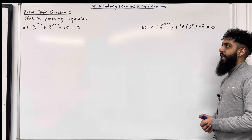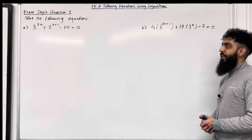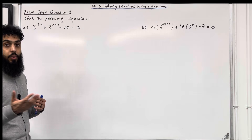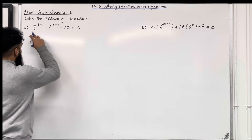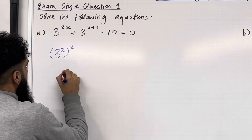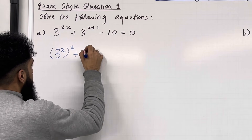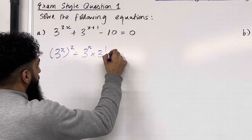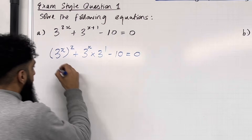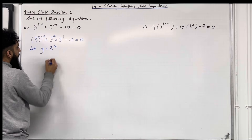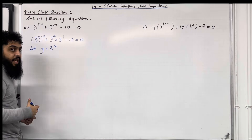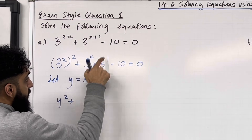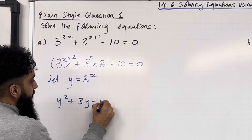Solve the following equations. Part A: 3 to the power 2x plus 3 to the power x plus 1 minus 10 equals 0. I'm going to start by rewriting this equation in quadratic form using laws of indices. Firstly, the first term can be rewritten as 3 to the power x in bracket to the power 2, plus the second term can be rewritten as 3 to the power x multiplied by 3 to the power 1 — the multiplication rule for laws of indices — minus 10 equals 0. Now I'm going to let y equal 3 to the power x. This will help me obtain a quadratic equation in the form y.